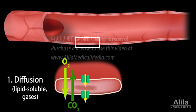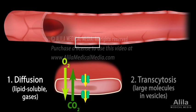Water moves by osmosis. Transcellular vesicle transport, or transcytosis: some proteins and hormones are packaged into lipid vesicles and transported through endothelial cells by endocytosis and exocytosis.